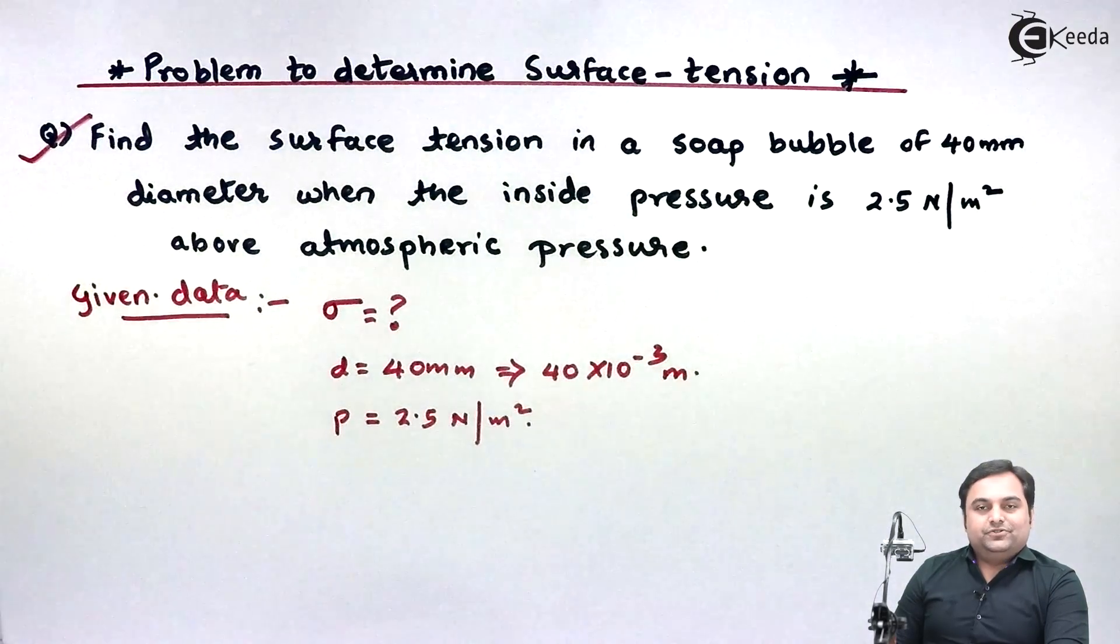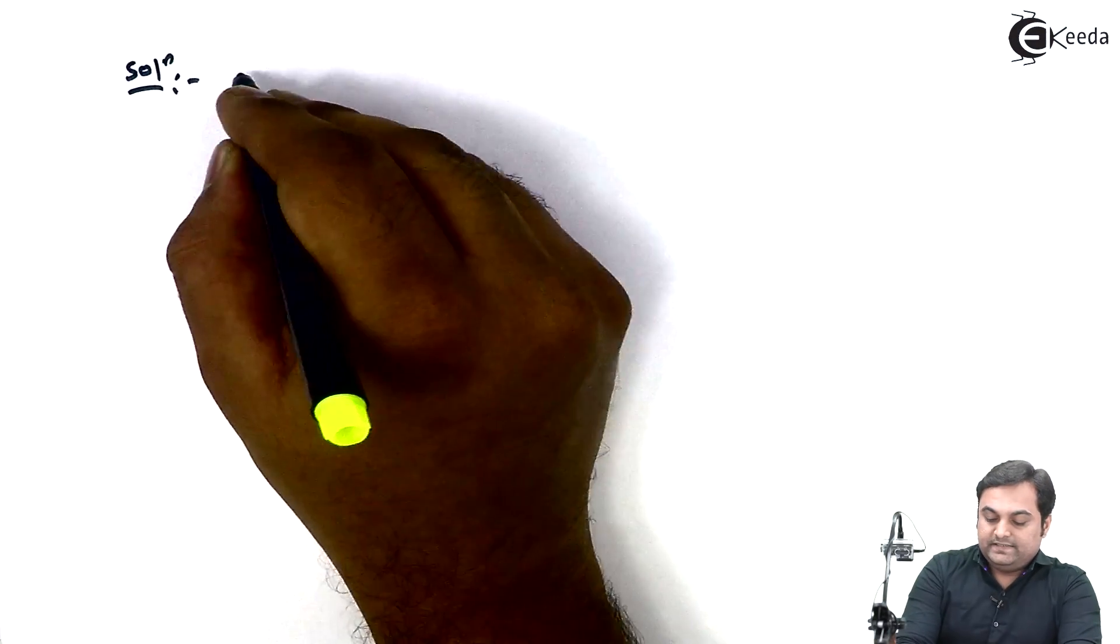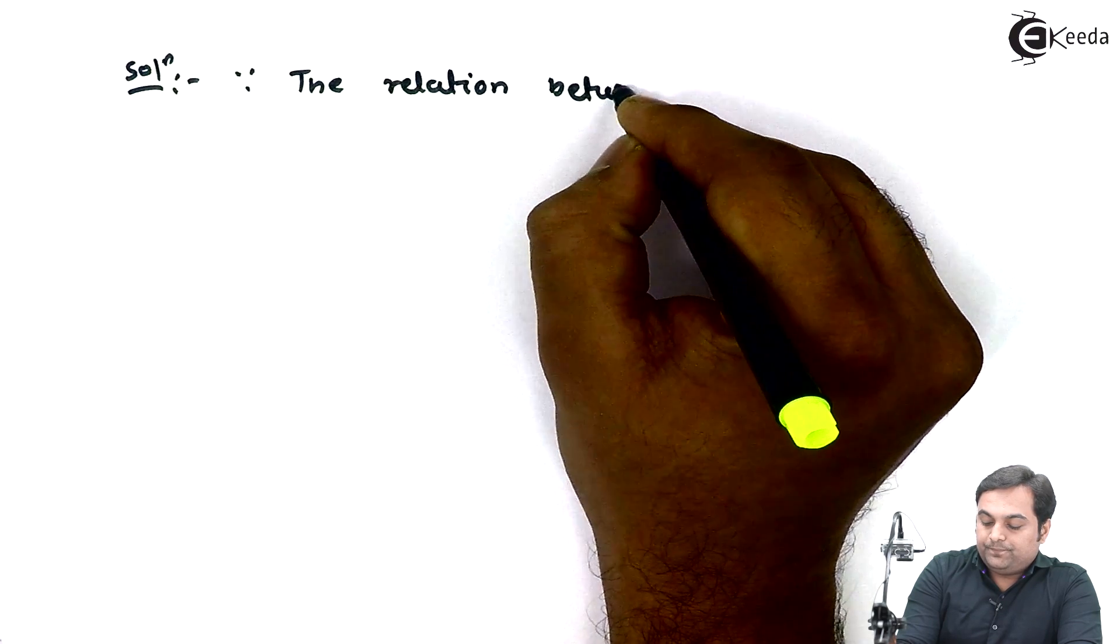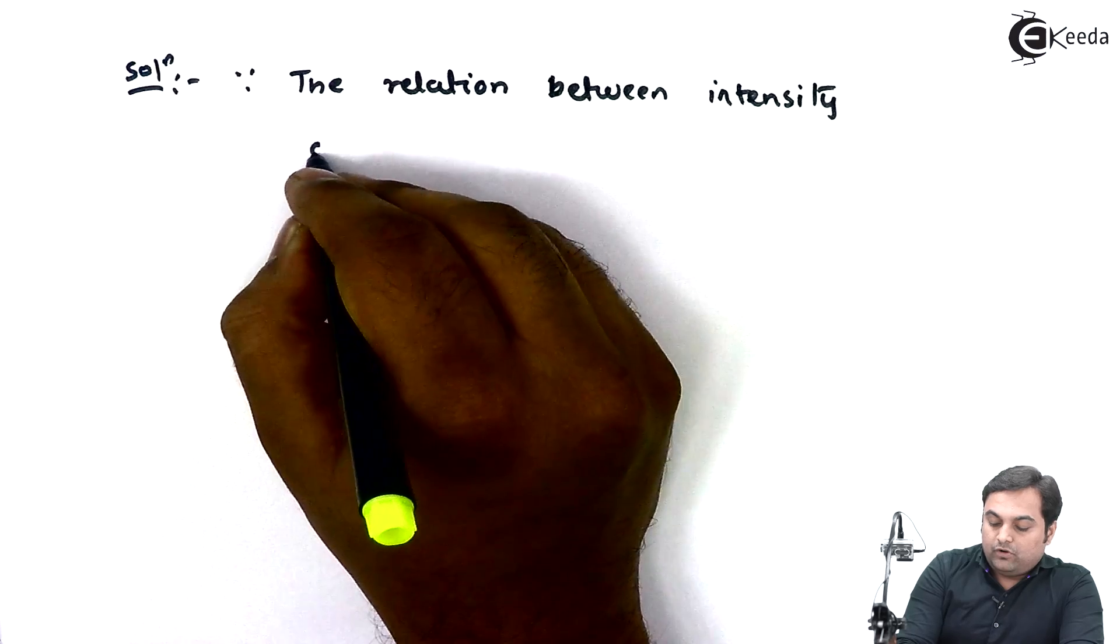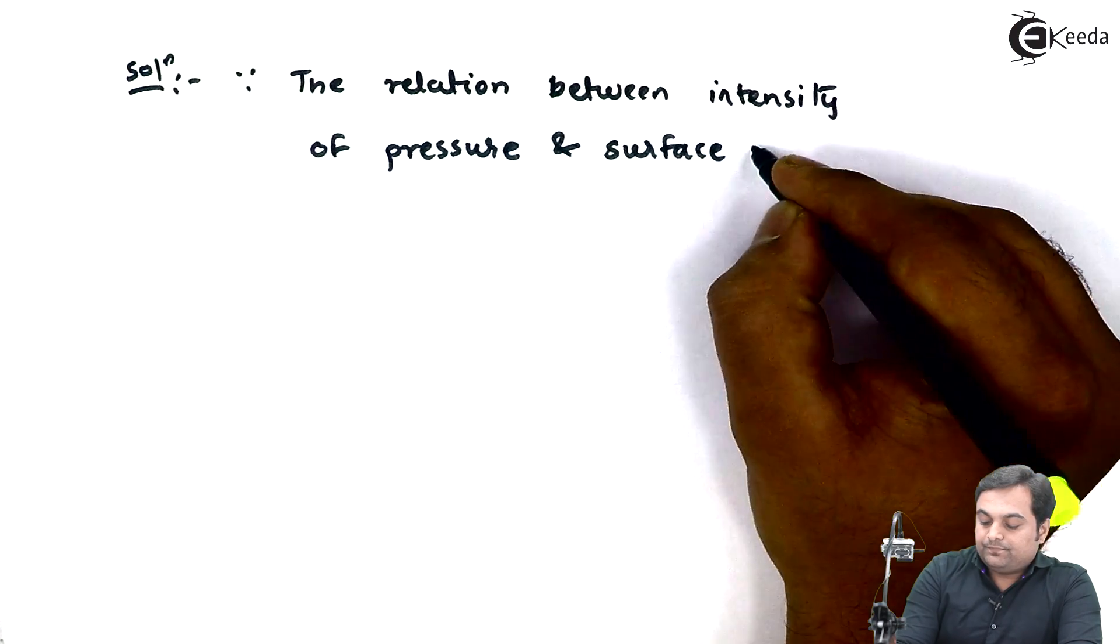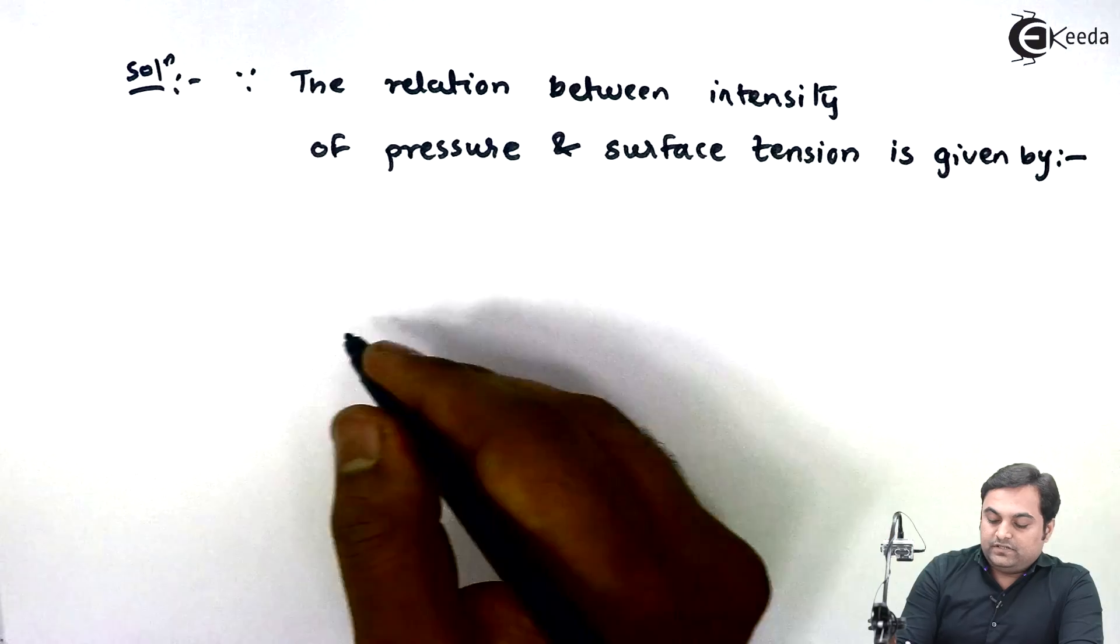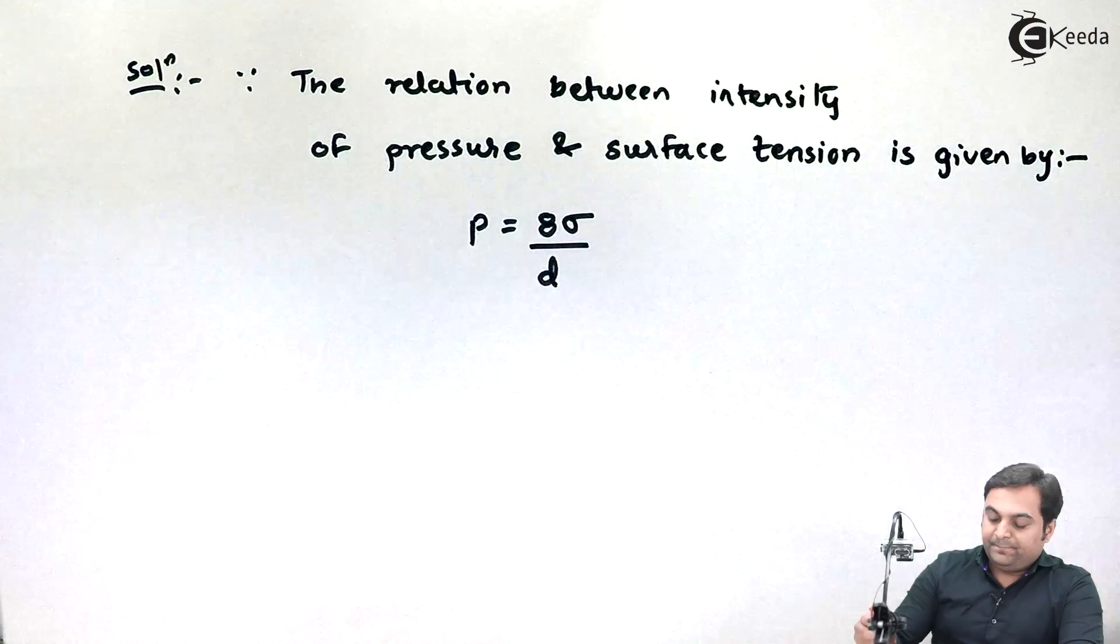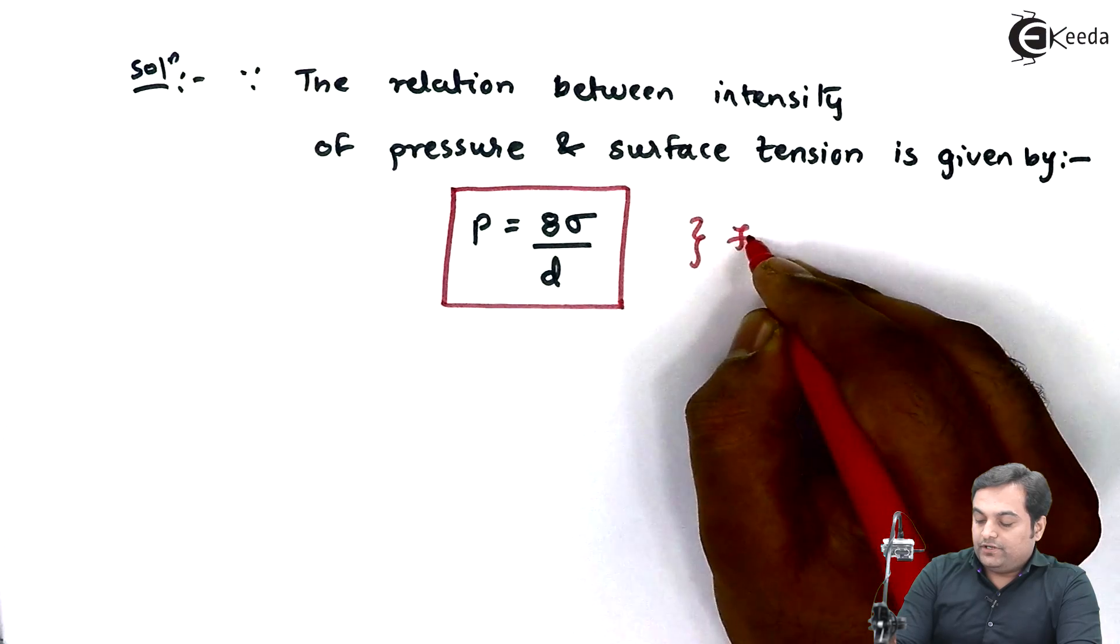Let us try to get the solution for this problem. The relation between intensity of pressure and surface tension is given by P is equal to 8 into Sigma divided by D. This relation is for a soap bubble.